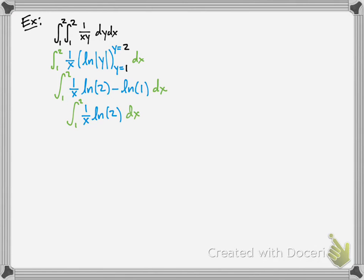So what we're going to do is pull that out and then integrate 1 over x with respect to x. So the antiderivative of 1 over x is ln of x. And we're going to evaluate it from 1 to 2.